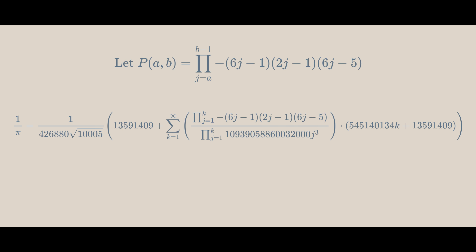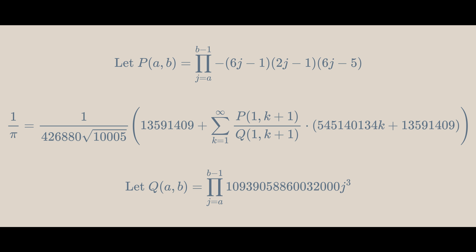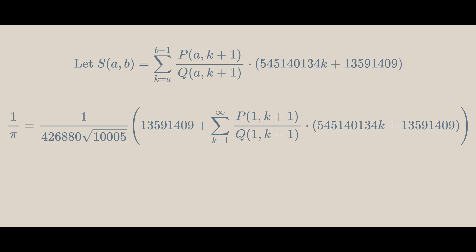The product of fractions is the same as the product of the numerators over the product of the denominators. Let's define P to be the product from j equals a up to b minus 1 of this. Let's also define Q to be the product from j equals a up to b minus 1 of this. You'll soon see why the product is only up to b minus 1.